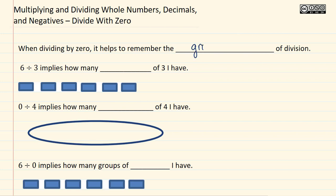Six divided by three implies how many groups of three I have. Another way you could write six divided by three is six over three. So if we're looking at how many groups of three I have, I can break this into a group of three here and a group of three here, so I have two groups of three.